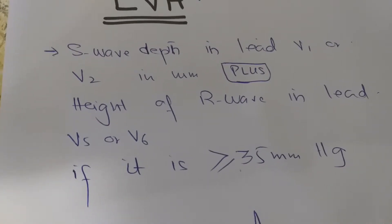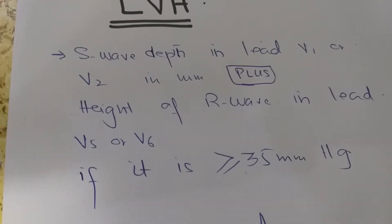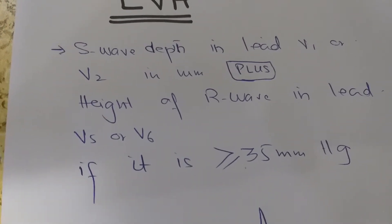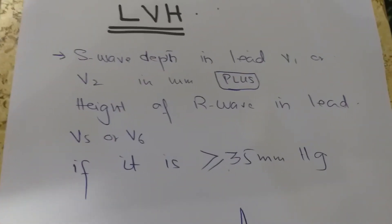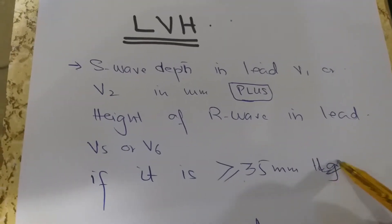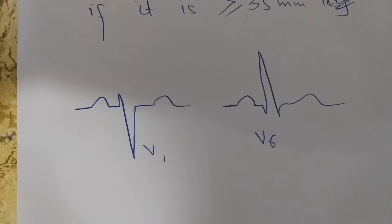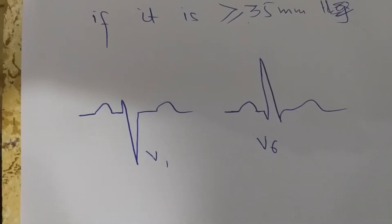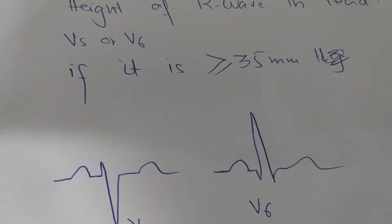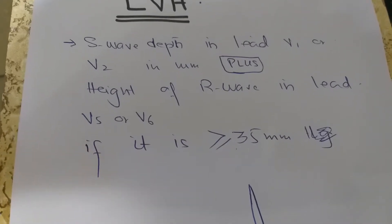At the end of this counting, we add them up: the depth of the S wave in lead V1 or V2, and the height of the R wave in lead V5 or V6. If adding them up gives us a value equal to or more than 35 millimeters, we call it left ventricular hypertrophy. There are many other ways to calculate LVH, but this is one of the simplest.